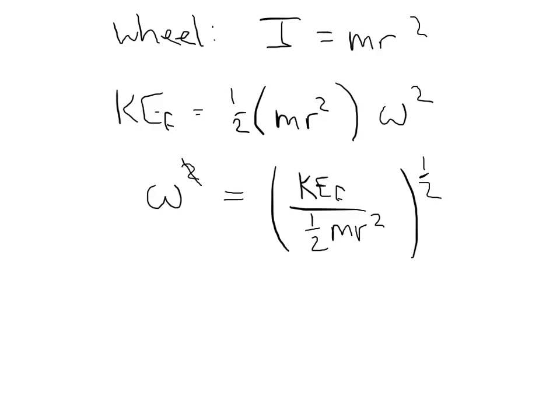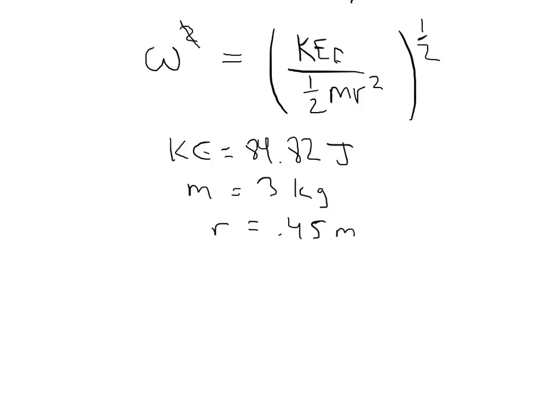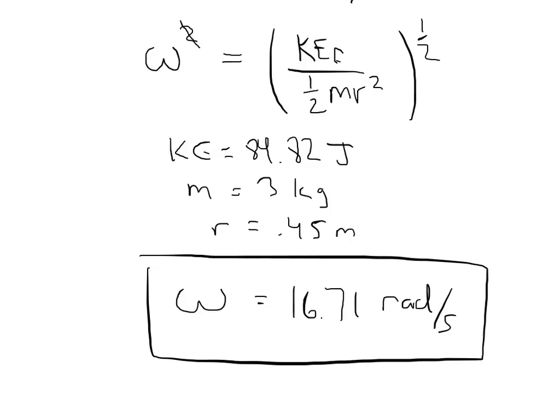When I go ahead and plug in all my numbers, the kinetic energy is 84.82 joules, M is 3 kilograms, and R is 0.45 meters. When I plug all of this in, I see that omega, my angular velocity, is going to be 16.71 radians per second. That is how fast the wheel is rotating. Thank you very much.